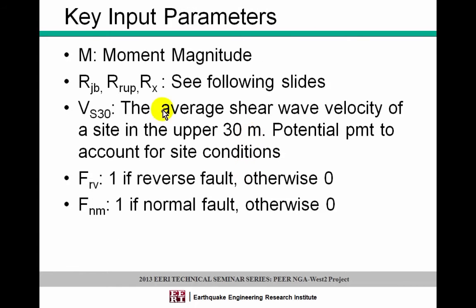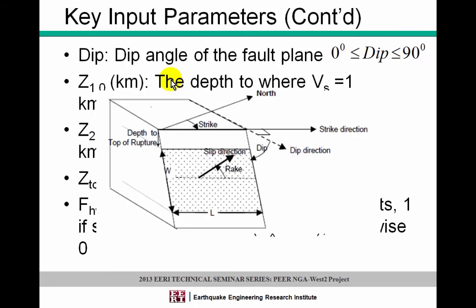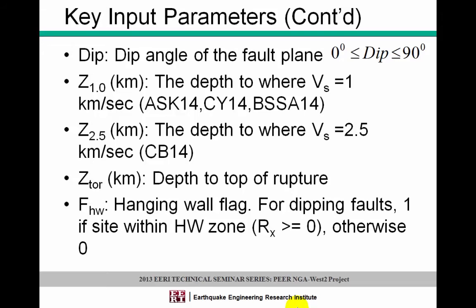Some of the key input parameters are: magnitude; distance; VS30, defined as the average shear wave velocity of a site in the upper 30 meters; and the style of faulting — if it's reverse, FRV equals 1; if it's normal, FNM equals 1; otherwise it's strike-slip. The dip is the angle of the fault plane between 0 and 90 degrees. Then there is the basin depth term Z1 or Z2.5, which is the depth to where the shear wave velocity horizon reaches 1 km/s or 2.5 km/s. There is also the depth to the top of rupture (Ztor), and if your site is on the hanging wall, the hanging wall flag equals 1.